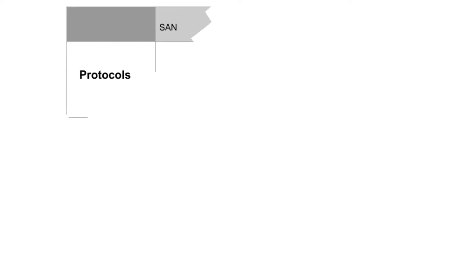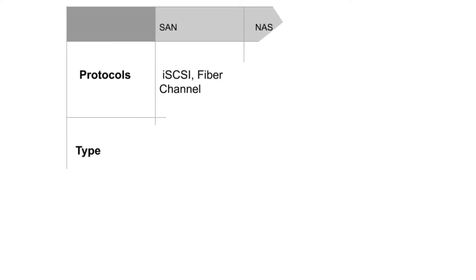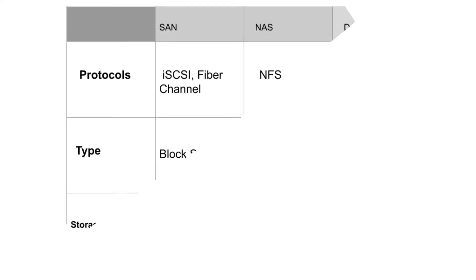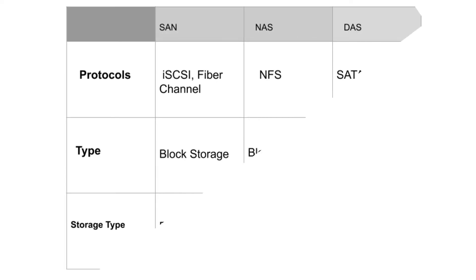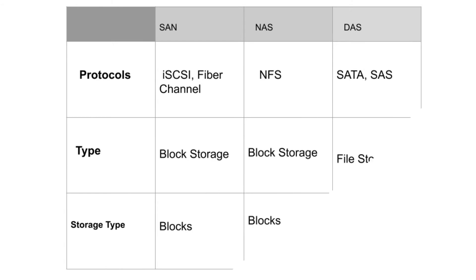The protocol that SAN uses is iSCSI and fiber channel. NAS uses NFS protocol. DAS uses SATA and SAS protocol. The type of storage that SAN uses is block storage. NAS uses block storage. DAS uses file storage.